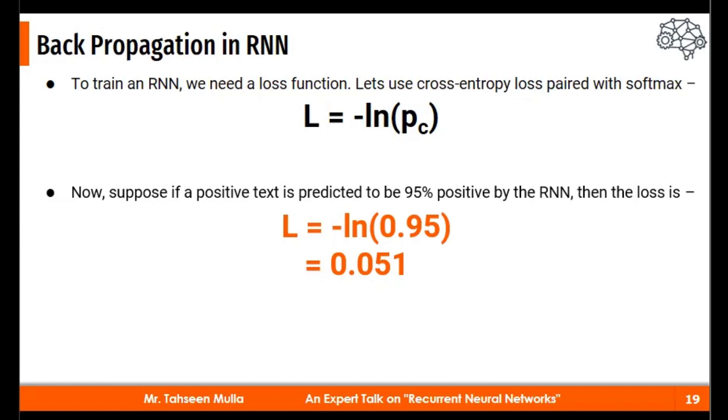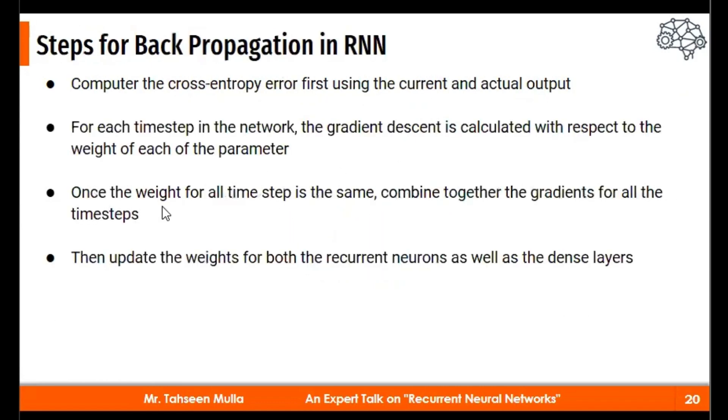So for example, if I'm having this kind of positive text, which is to be predicted as 95% positive, then after calculating loss, what we get, we train the RNN by using gradient descent to minimize the loss. Now, this loss must go on minimizing. So there are a few steps how we can implement this. So what we need to first do compute the cross entropy error first by using the current and the actual output. Now, after the first step, we will be unfolding it.